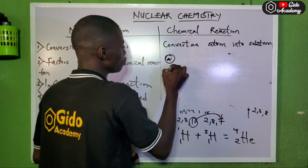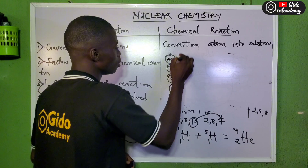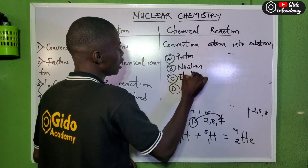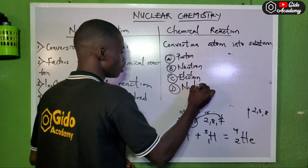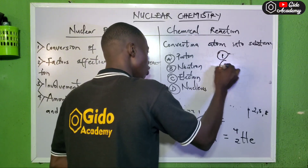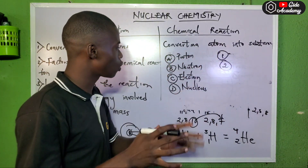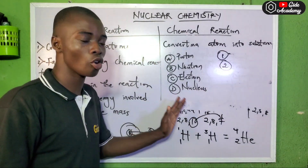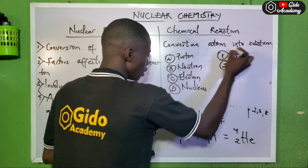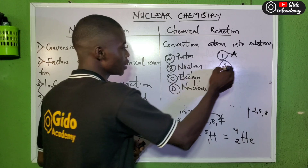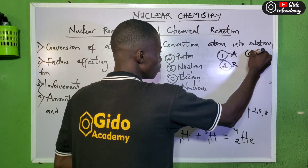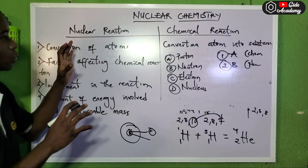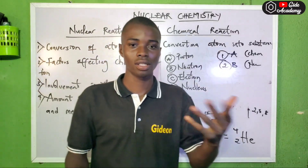Now here is a quick quiz with options: A — proton, B — neutron, C — electron, D — nucleus. Question one: which of the following takes part in a chemical reaction? Question two: which of the following takes part in a nuclear reaction? You can go to the comment section and write your answers as number one and number two. Don't forget to subscribe to my YouTube channel. See you in the next episode.